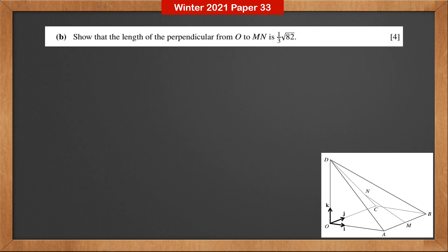Part B. Show that the length of the perpendicular from O to MN is 1 third of root 82.